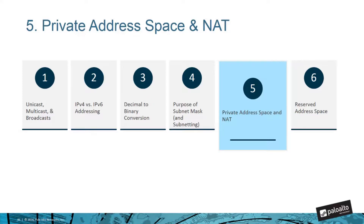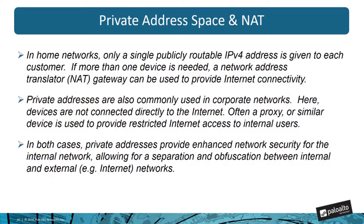Now that we've finished doing subnetting, the next thing we want to look at is the private address space and network address translation. One of the issues with trying to route from one network to another is that sometimes you may have to go out to someplace like the internet from an internal network. Internal network address spaces are not routable on the internet, so you need a mechanism called network address translation that maps a private address on the inside of your network to a public address exposed to the internet. That's who the web server would send their transmission to. So a little bit here on the private address space and NAT.